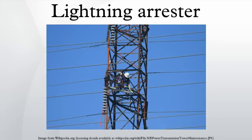Smaller versions of lightning arrestors, also called surge protectors, are devices that are connected between each electrical conductor in power and communication systems and the Earth. These prevent the flow of the normal power or signal currents to ground, but provide a path over which high-voltage lightning current flows, bypassing the connected equipment.